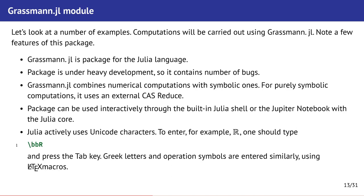Now about Grassmann.jl module. Grassmann.jl module is under heavy development so it has a number of bugs. Some of them we find in our study and we will note them in examples. Grassmann.jl combines numerical computation with symbolic ones. For purely symbolic computation it uses external CAS Reduce. Package can be used interactively. We use it with built-in Julia shell but it's also possible to write simple scripts and run it with Julia compiler.